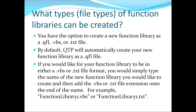If you would like your function library to be in either a .vbs or .txt file format, you would simply type the name of the new function library and then add the .vbs or .txt file extension onto the end of the name. For example, if you wanted to create a function library called 'function library 1' as a VBScript file, you would type 'function library 1.vbs'. Or if you wanted it as a .txt file, you would type 'function library 1.txt'.